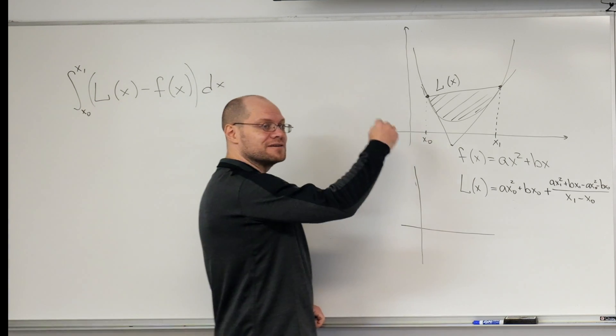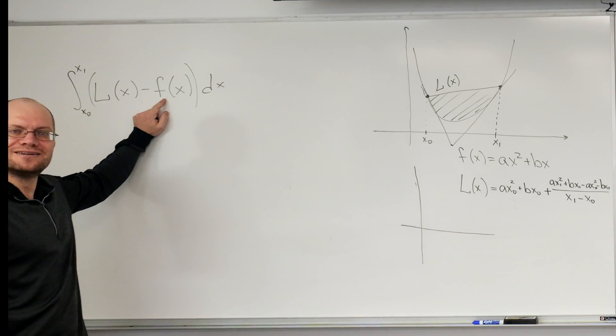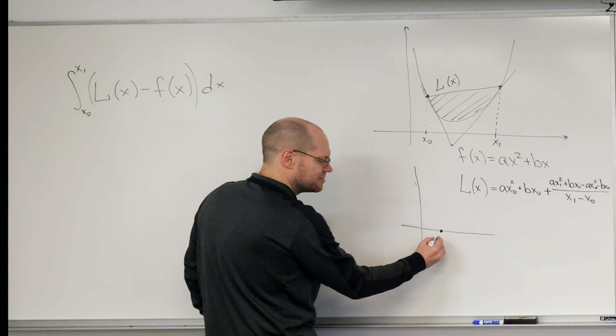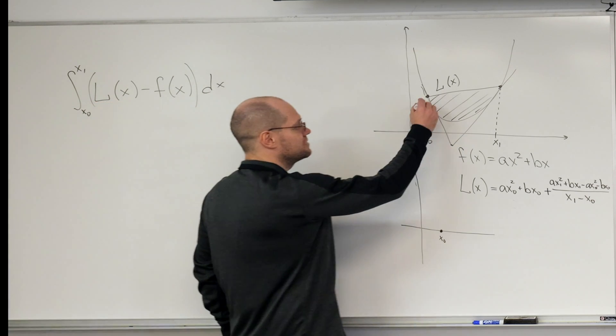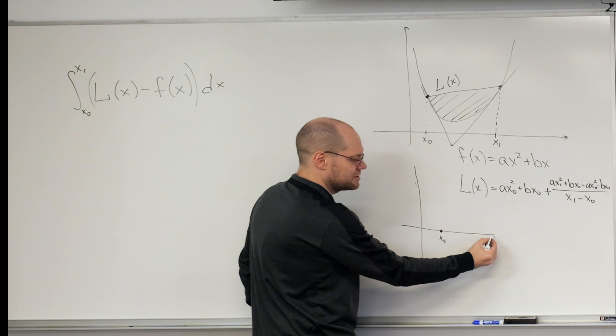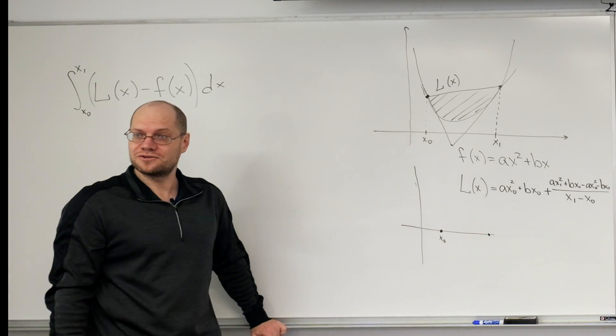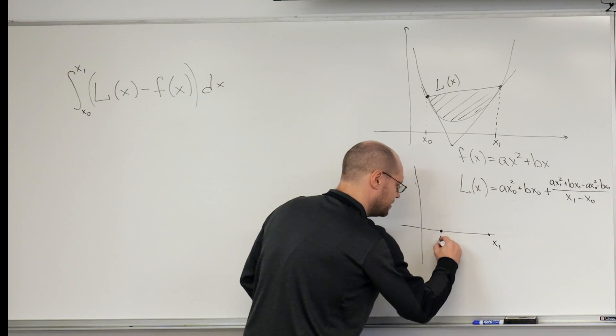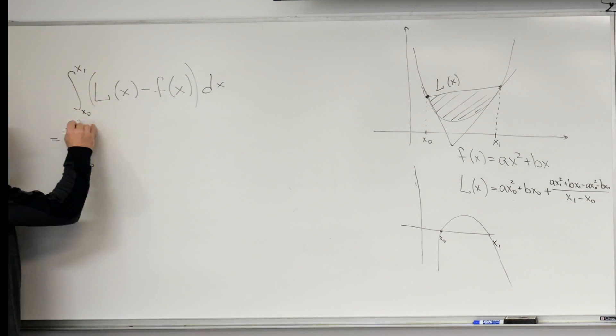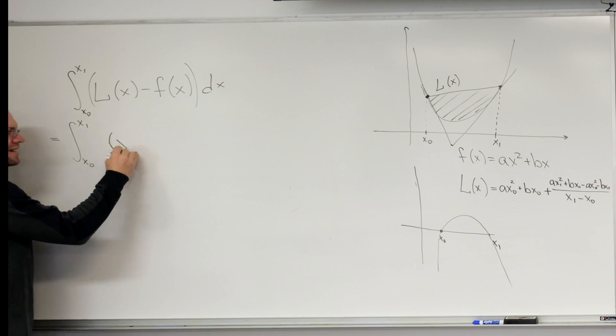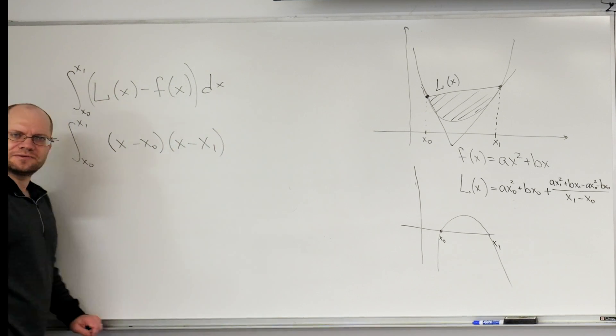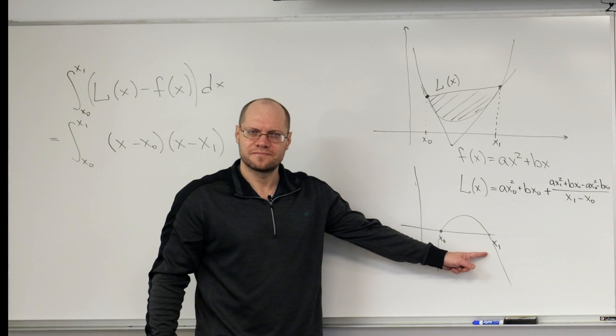If our original parabola is right-side-up, then this one is upside-down because we're subtracting the parabola. What is its value at x0? Zero, because the two functions agree at x equals zero. And what is its value at x1? Also zero. So it's a parabola that looks like this. And we know what the equation for a parabola that looks like this is. It's essentially (x minus x0) times (x minus x1).